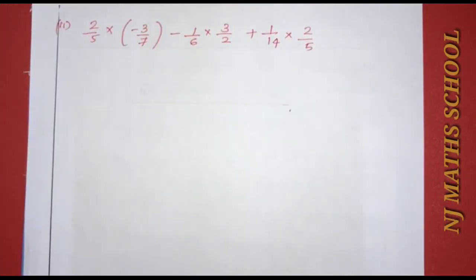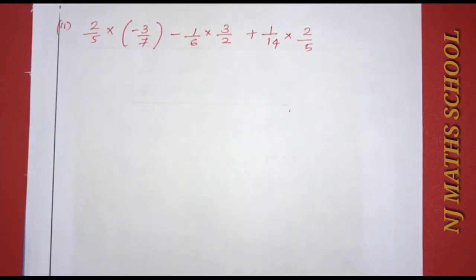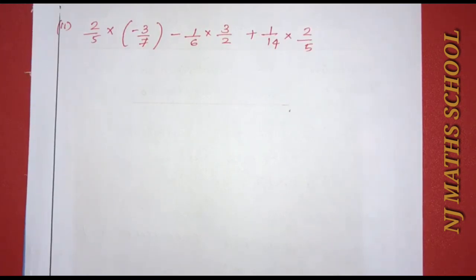The next question: 2 by 5 into (minus 3 by 7) minus 1 by 6 into 3 by 2 plus 1 by 14 into 2 by 5.